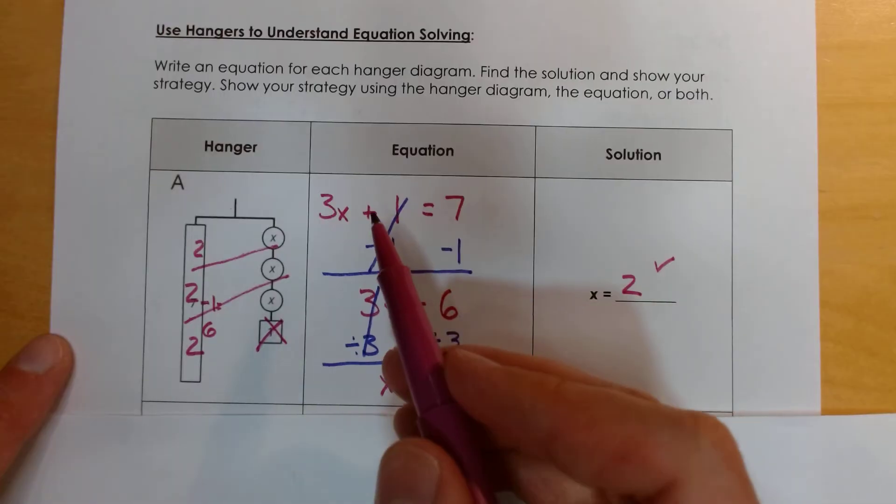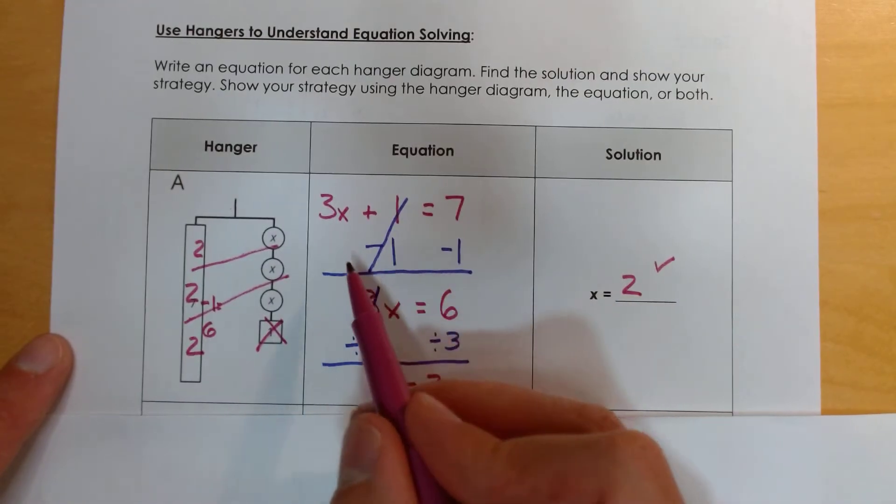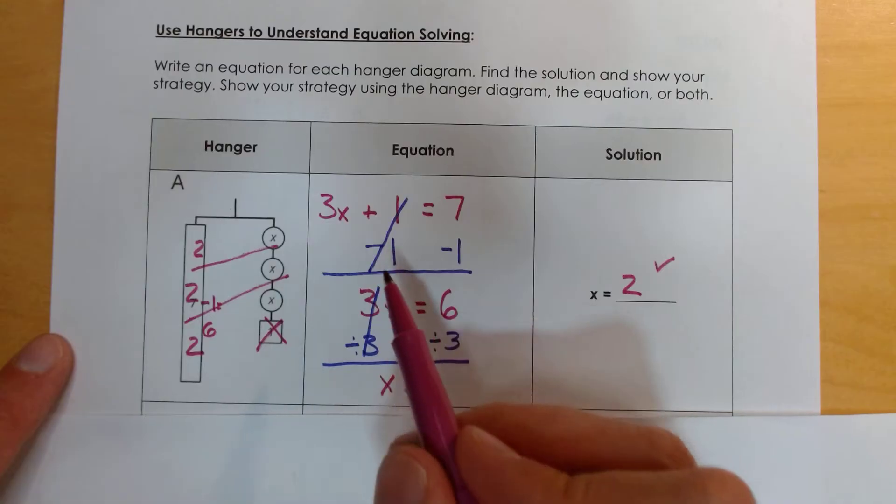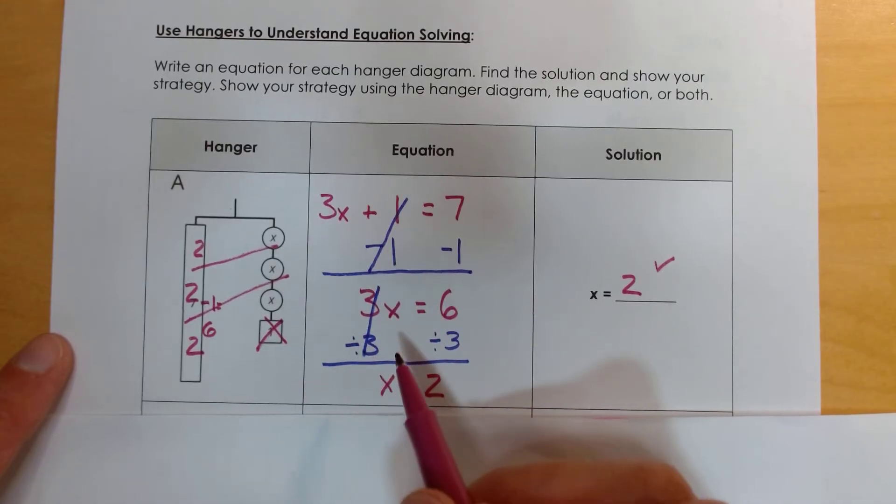And again, these are called two-step equations because it takes one step to get rid of this one that's being added and a second step for our division to figure out what one of those x circles equal.